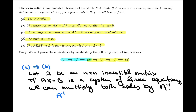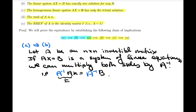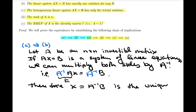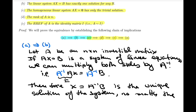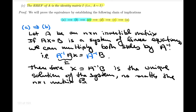Therefore, we have a inverse times ax equals a inverse times b. We know that a inverse times a is I, and therefore x equals a inverse times b is the unique solution of the system. This is true no matter what we choose as the n by one matrix b. So for any matrix b, we've proved the implication a implies b.